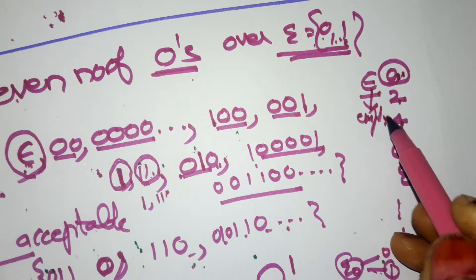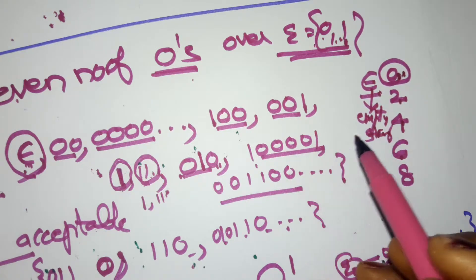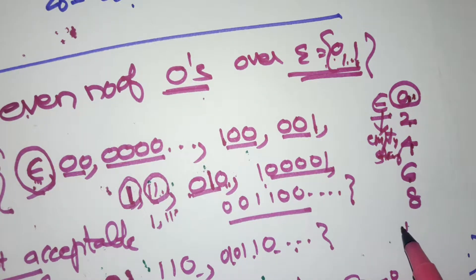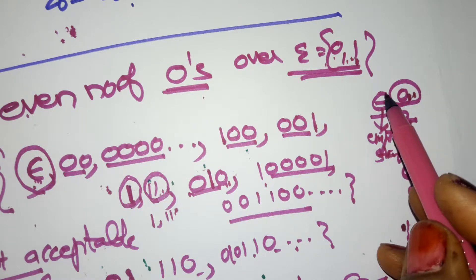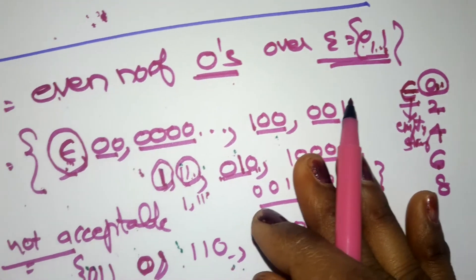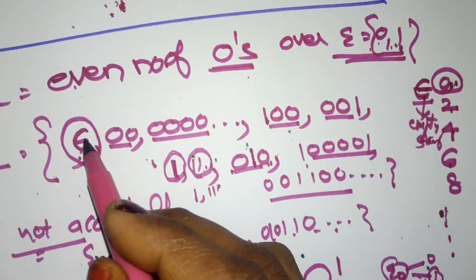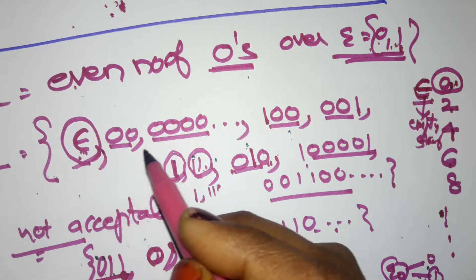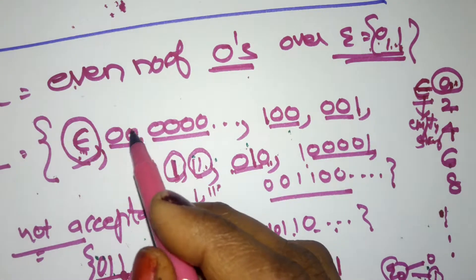Zero number of zeros can be represented by epsilon, which is the empty string. Without taking any input, the string should still be acceptable — that is represented by epsilon. So epsilon is acceptable, two zeros are acceptable, four zeros are also acceptable, and so on.